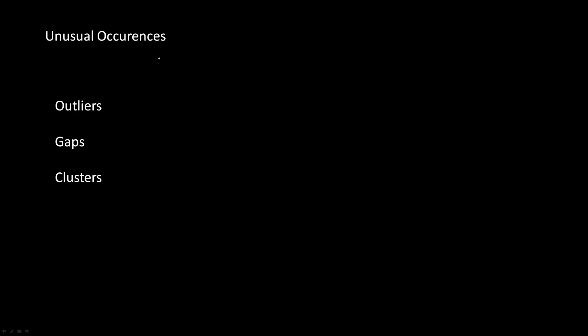The second way to describe a graph is unusual occurrences. This is when there are outliers, gaps, or clusters within a data set. For example, if we had a data set of 2, 3, 6, and then suddenly 100, we would say that there's an unusual occurrence in the data set — the value 100.